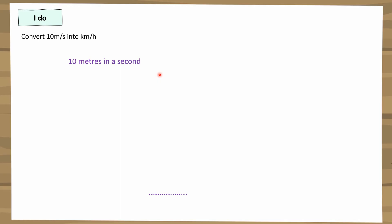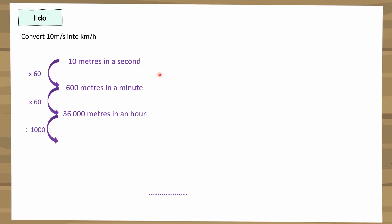So if something is travelling 10 metres every second, how far will it travel in a minute? There are 60 seconds in a minute, so it'll do 60 times that amount — 600 metres every minute. And if it can go 600 metres in a minute, how far in an hour? That's 60 times more, so 36,000 metres in an hour. There are 1,000 metres in every kilometre, so 36,000 metres is 36 kilometres per hour.